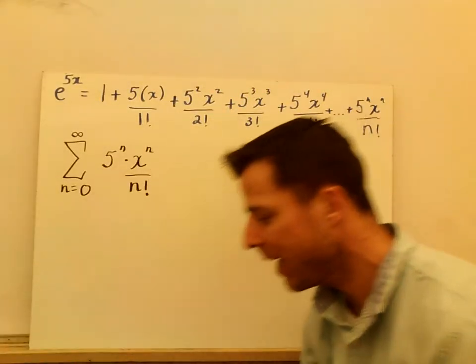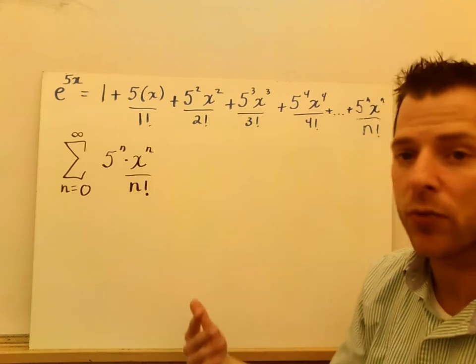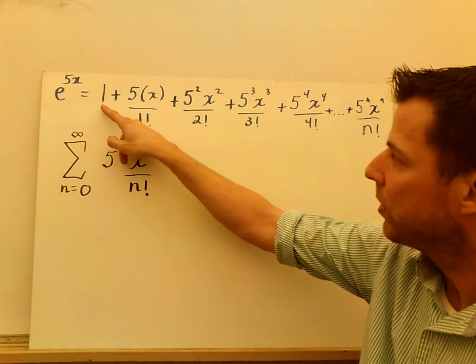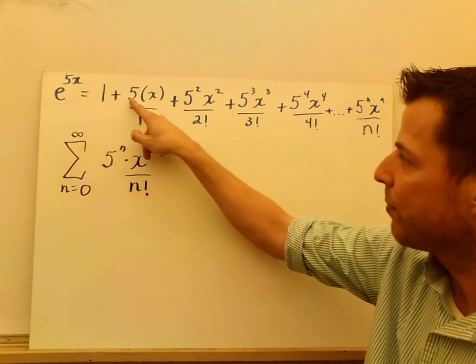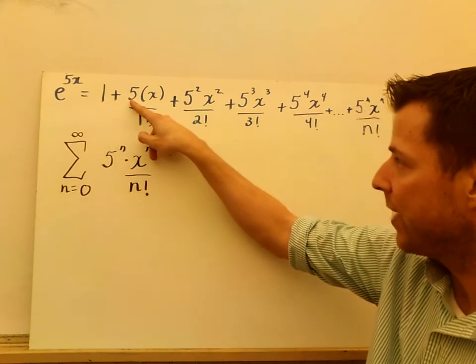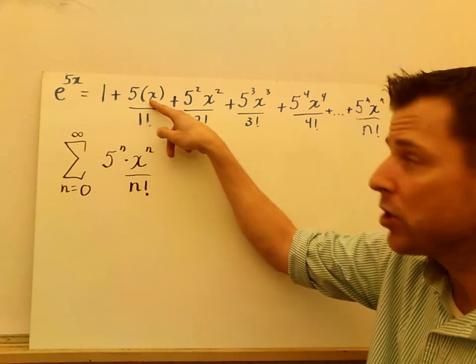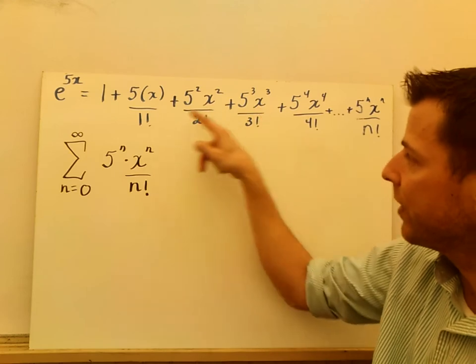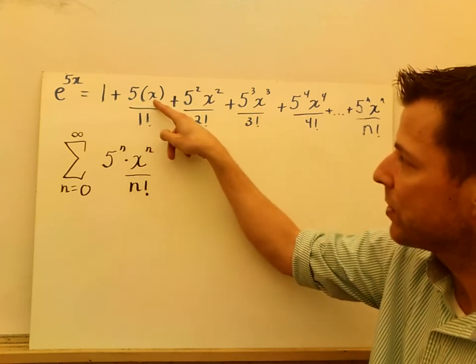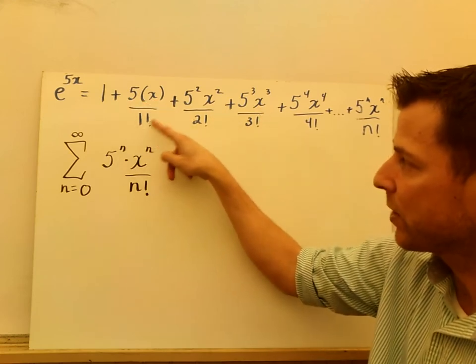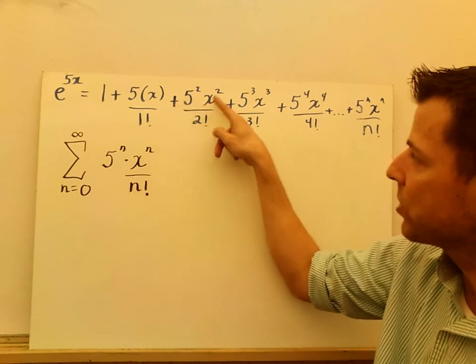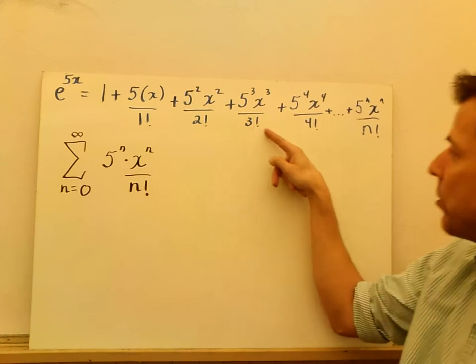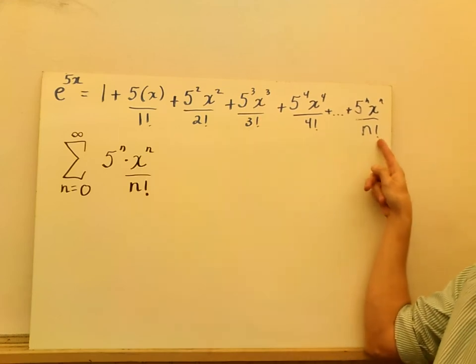All right, so now that I have all those values, I'm going to start to write the Maclaurin series. So e^(5x) can be written as, here's f(0), right, which was 1. Then f'(0) was 5 times x, and this should be x minus a to the whatever power, but the minus a, the a is 0, so I don't have that. So we have 5 to the 1st times x over 1 factorial plus 5 squared x squared over 2 factorial plus 5 cubed x cubed over 3 factorial, and that pattern keeps on going.